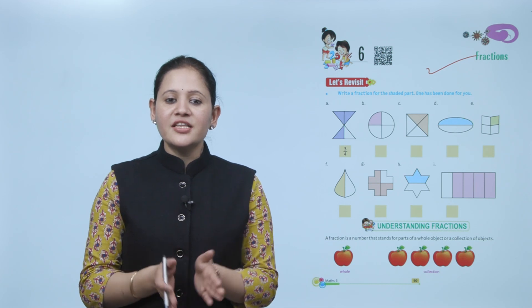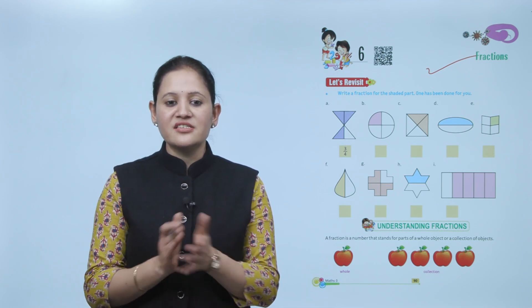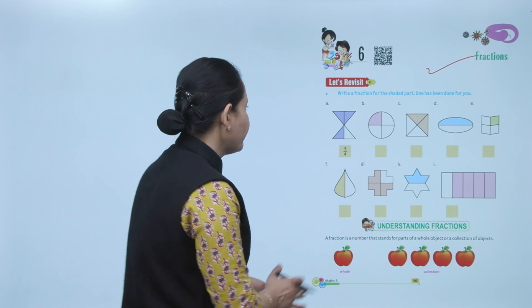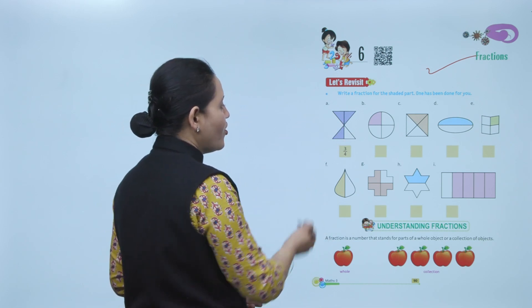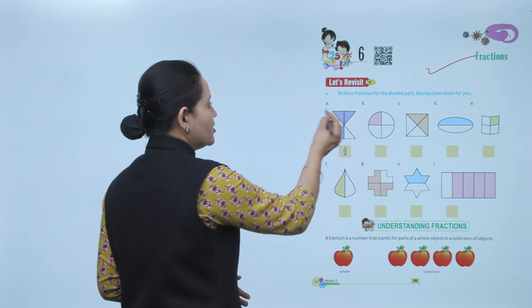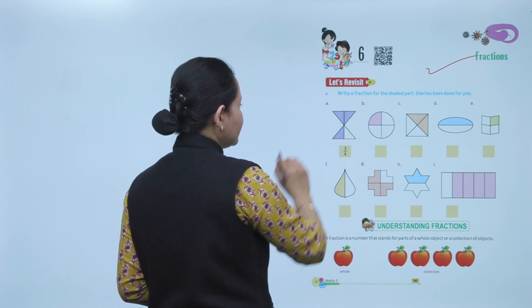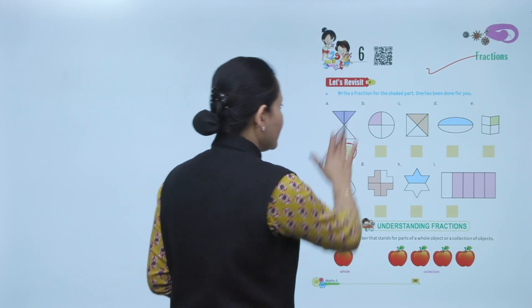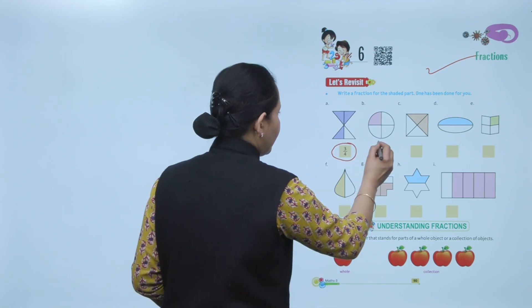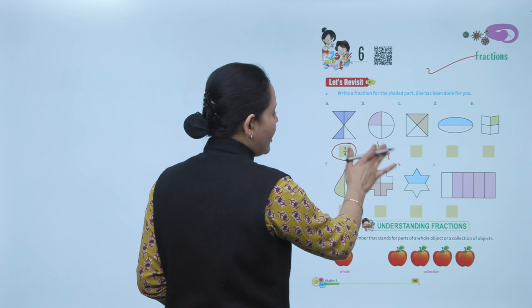Let's revisit: write the fraction for the shaded part. One has been done for you. Here it is divided into 4 equal parts — 3 are shaded, so the fraction is 3 by 4. Here, 4 equal parts, out of that 1 is shaded, so we'll represent 1 by 4.